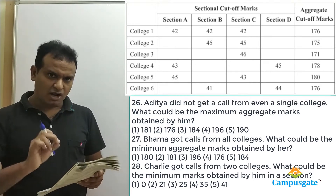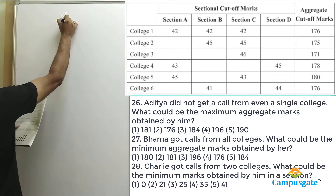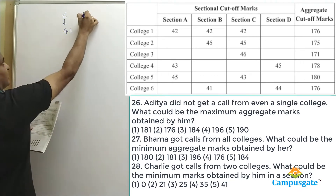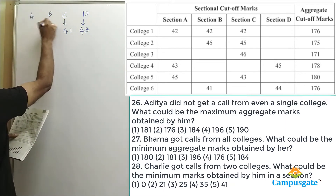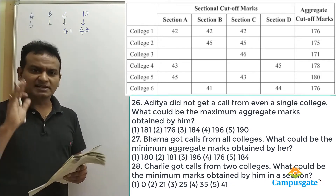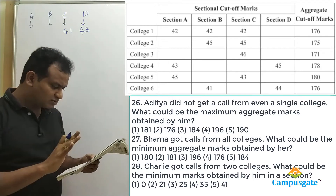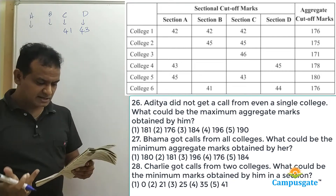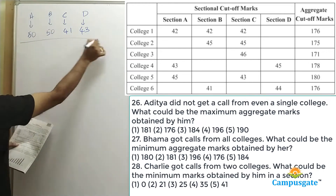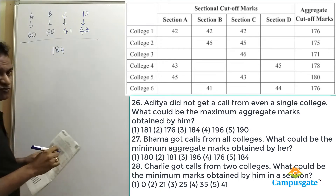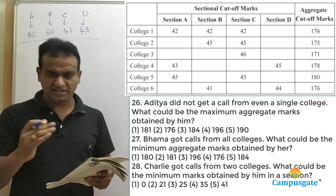The key point in answering this question is to look at sections C and D together. If a person gets 41 marks in section C, colleges one, two, three, and five are ruled out. If he gets 43 marks in section D, colleges four and six are also ruled out. So even if he scores 50 and 50 in the first two sections, giving an overall total of 184, he won't get a call from even a single college. The answer for this question is option three: 184.